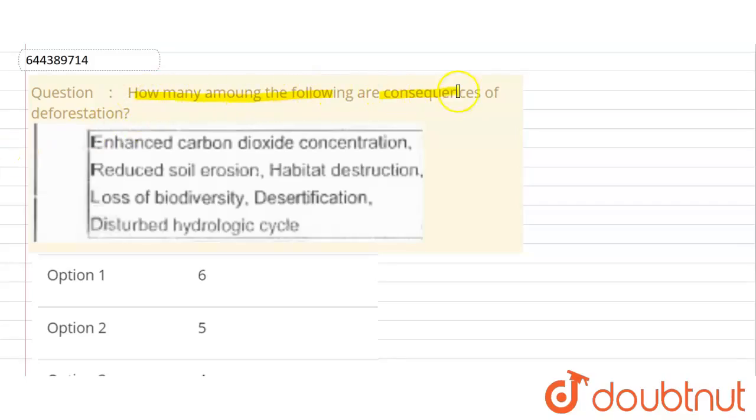How many among the following are the consequences of deforestation? Okay, so what is deforestation? That is cutting off all the trees and clearing out the forest is called deforestation. Okay, so what will happen if there will be deforestation in a particular area or land?